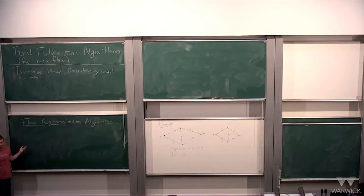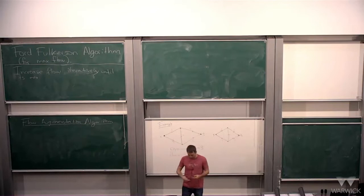How we're going to increase the flow is using something called the flow augmentation algorithm. This is really where all the meat is in this algorithm. Basically, the whole max flow algorithm is going to be: start with a zero flow, and then keep applying this augmentation algorithm.